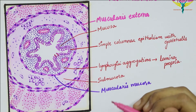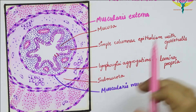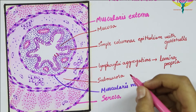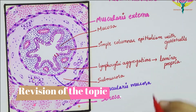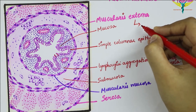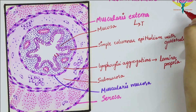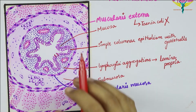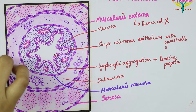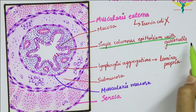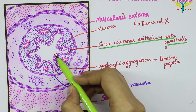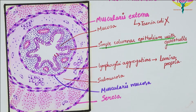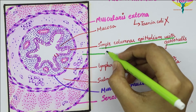The longitudinal muscle coat is completely and equally thick all around in the vermiform appendix, and the taenia coli are not present — this is the main differentiation point between the appendix and the colon. The crypts are poorly present, and the lining epithelium is simple columnar epithelium containing goblet cells. You can see many lymphoid aggregations in the mucosa, and the submucosa also shows lymphatic nodules.